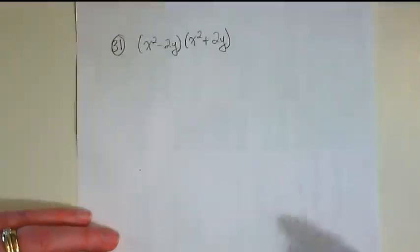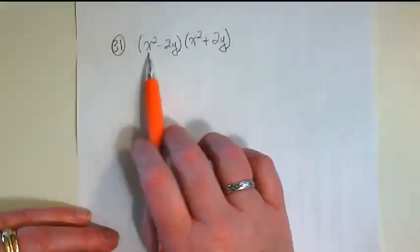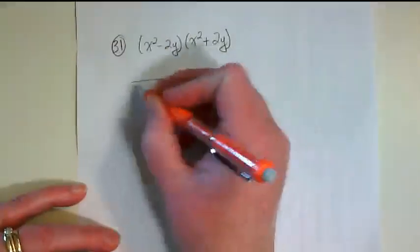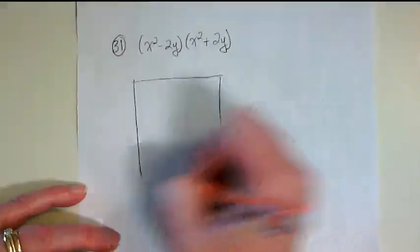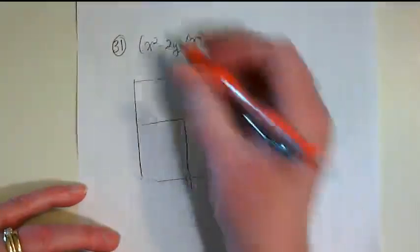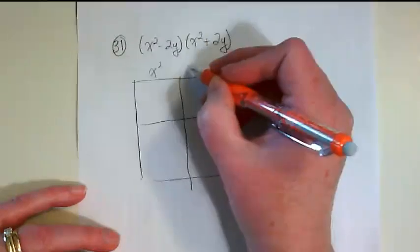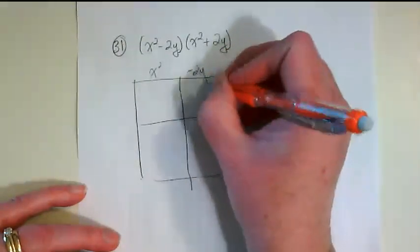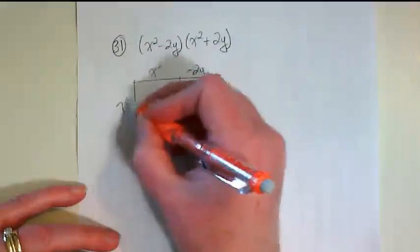Okay, here is another slightly tricky problem because our two factors both have a variable in them. So I just want to show you how we can do this with the box method. I'm going to put the first factor up top here on my box, and the second factor down the side.